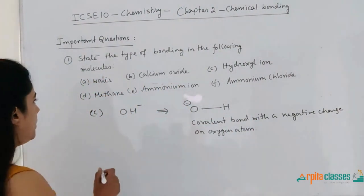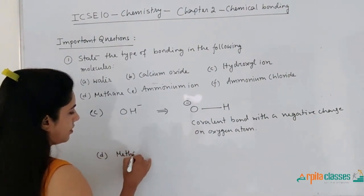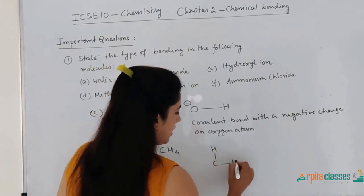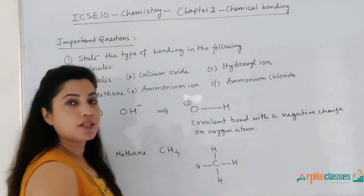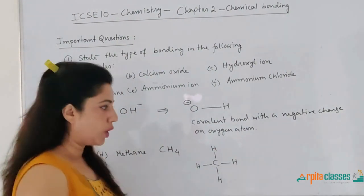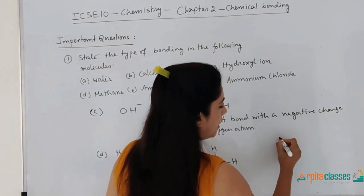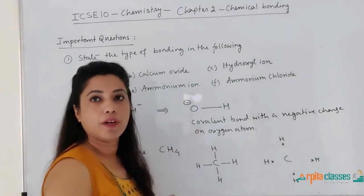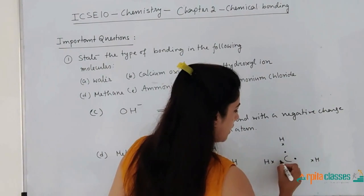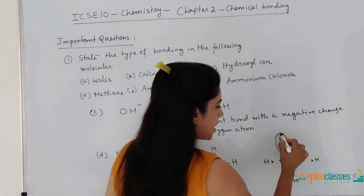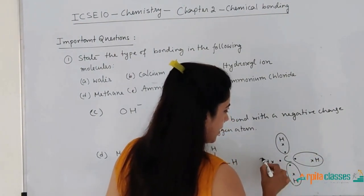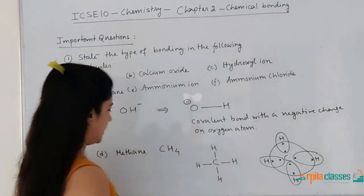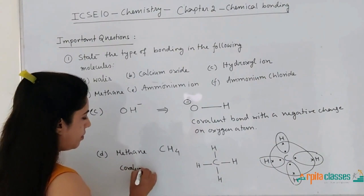The next molecule is methane. The chemical formula for methane is CH₄. This is purely a covalent bond because all the hydrogens have to complete their duplet and carbon has to complete its octet by sharing electrons. Carbon's electronic configuration is 2, 4 — there are 4 electrons in its outermost shell, shown by dot. All the hydrogens complete their duplet, and carbon completes its octet by taking one electron from each hydrogen. Therefore, the bond is a covalent bond for the methane molecule.